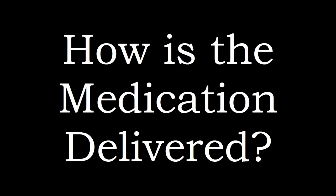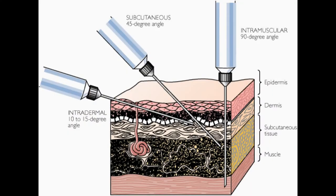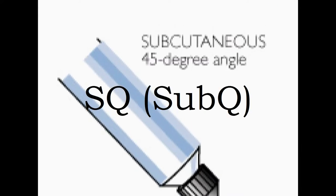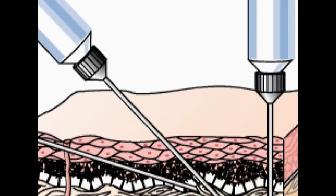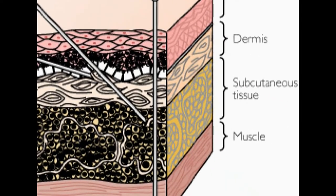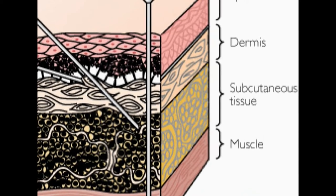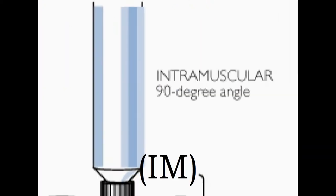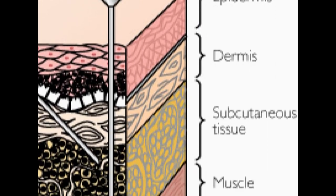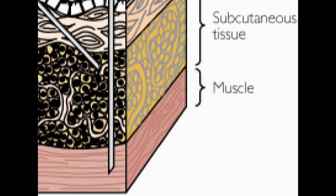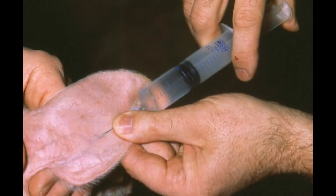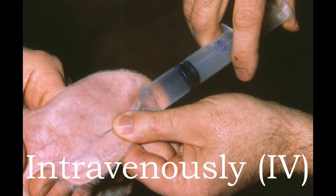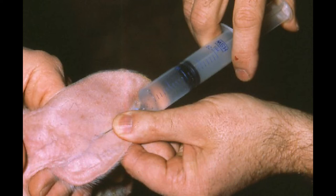Medication is delivered in four specific ways, but three of them pierce the skin. There's the subcutaneous injection, where medication is injected deep into the skin under the dermis into the subcutaneous fatty tissue. Then there's the intramuscular injection, where medication is injected directly into the muscle. Medication can also be injected intravenously, meaning directly into a vein.